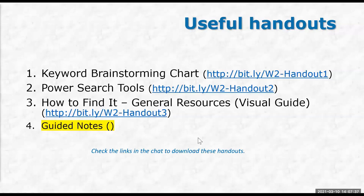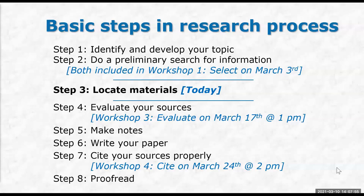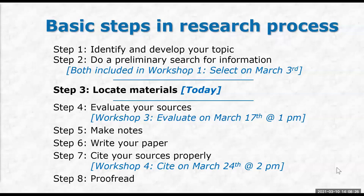Let's start with the research process. We've talked about the four different handouts we're going to be using. The basic steps in the research process — we're going to go over this briefly; we covered it in more detail last time. Last time we did steps one and two, which was identifying a topic and doing an exploratory search. Today we're going to focus on step three, which is locating materials — your research resources.